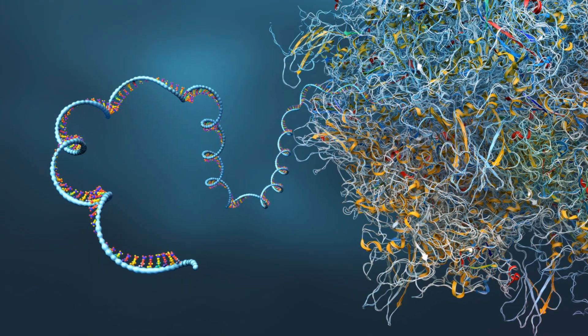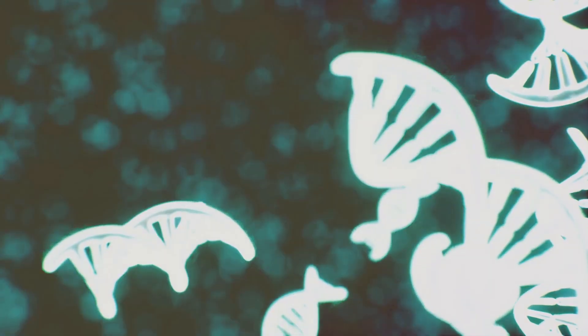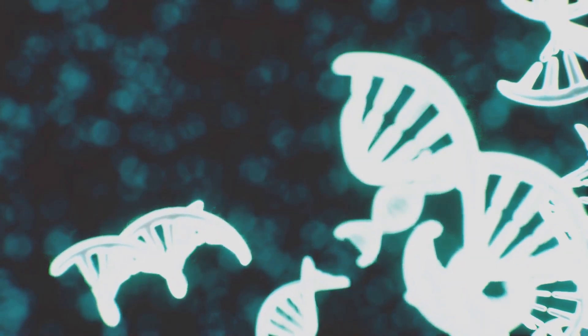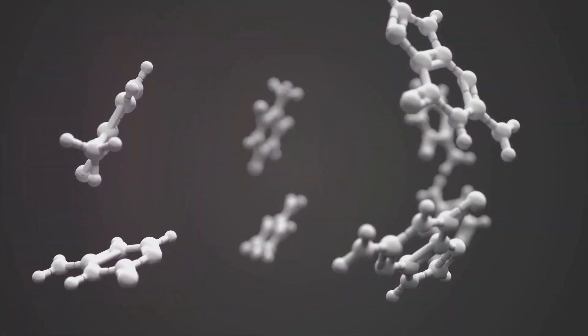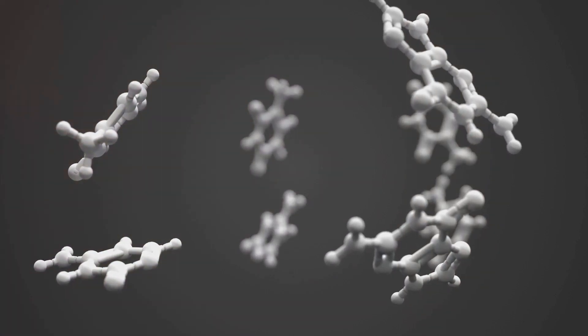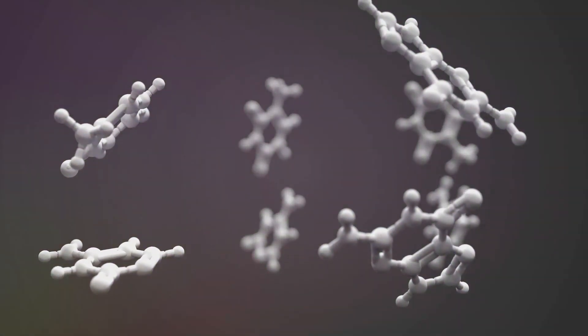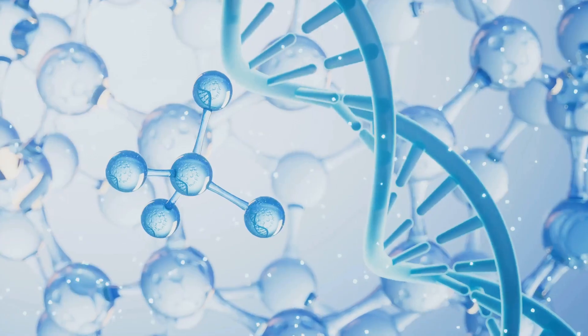But there's much more to RNA than this messenger role. RNA is a single-stranded molecule, differing from the double helix structure of DNA. It's composed of four different types of nucleotides: adenine, uracil, cytosine, and guanine.